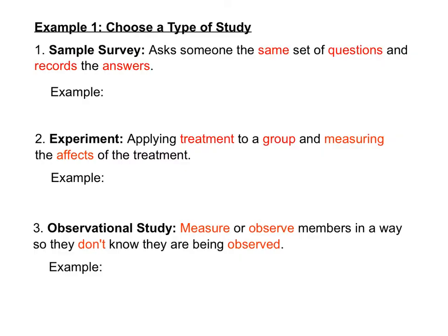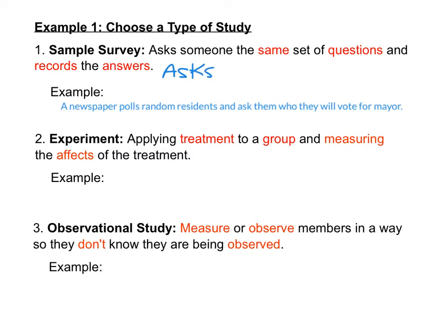Now let's talk about the three different types of studies. The first type is called a sample survey. A sample survey asks someone the same set of questions and records the answer. The key is that you're asking a question, and asking that question to everyone. For example, suppose a newspaper polls random residents and asks who they will vote for mayor — that is a sample survey. The key to a sample survey is that it must ask a question. Circle or highlight that in your notes.